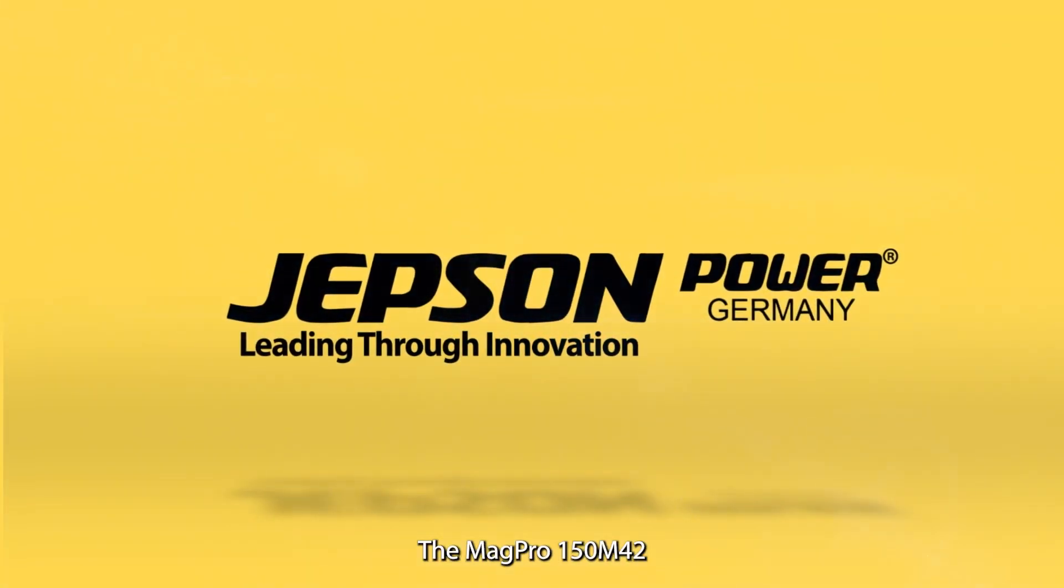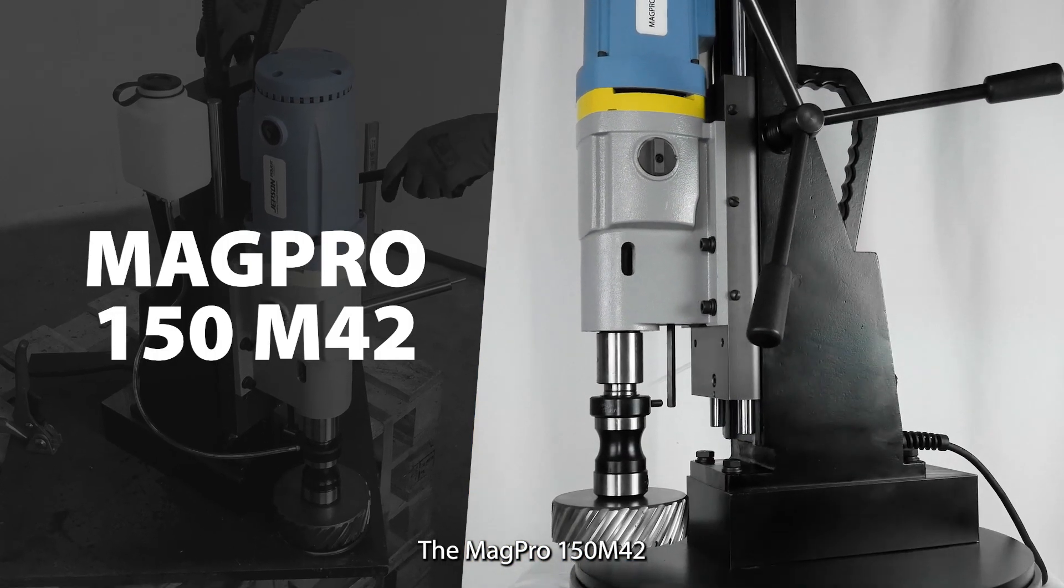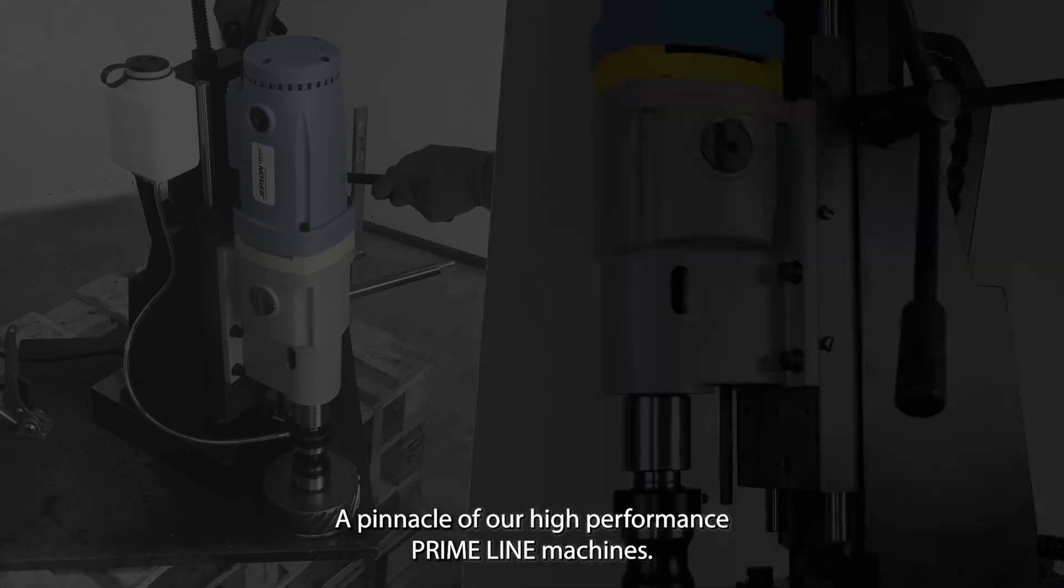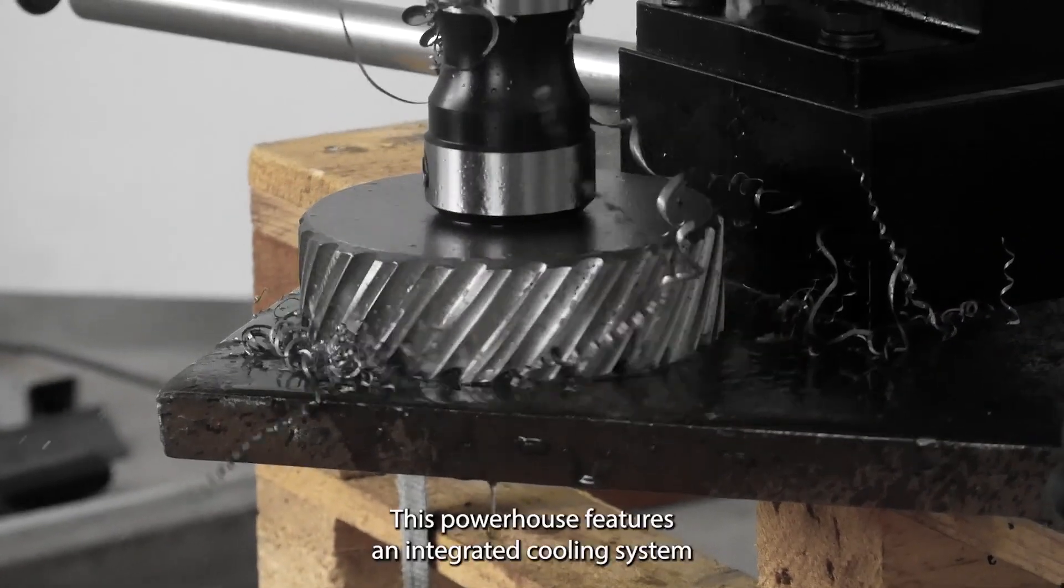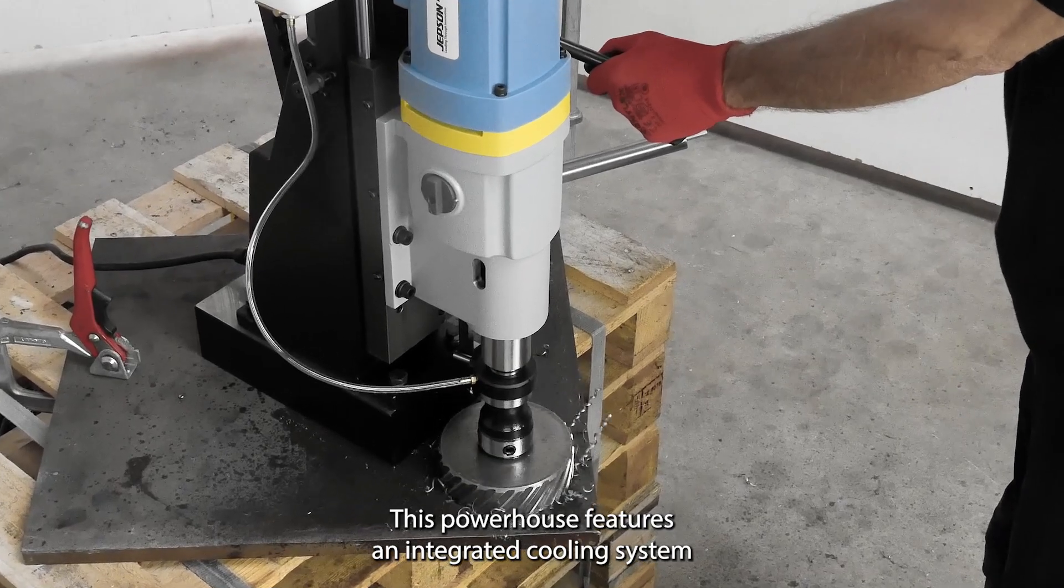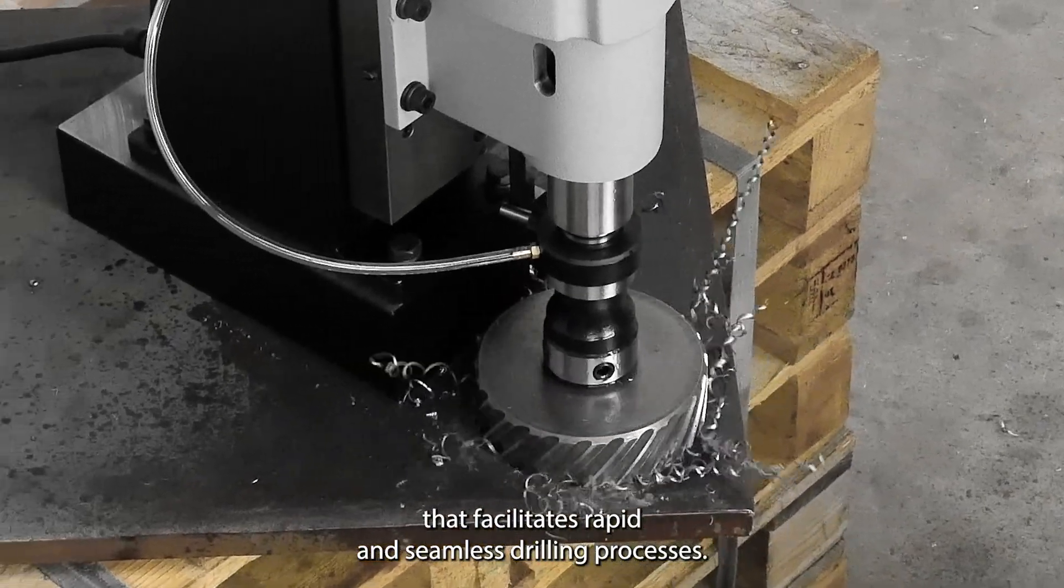Jepson Power presents the MAG PRO 150M42, a pinnacle of our high-performance prime line machines. This powerhouse features an integrated cooling system that facilitates rapid and seamless drilling processes.